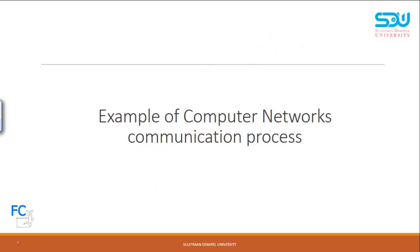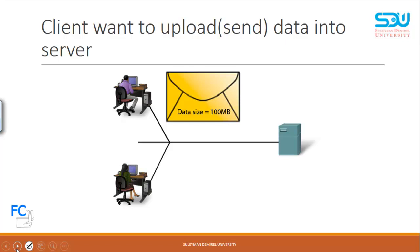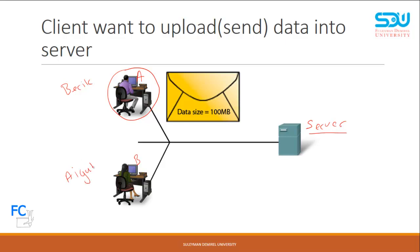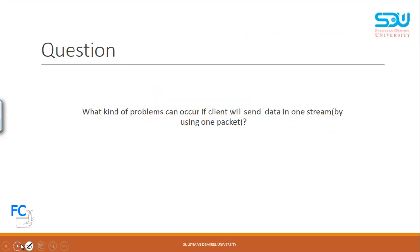Let's look at the computer networks communication process. In this example, we have three end devices: computer A, computer B, and a server. The client — let's say his name is Beric — wants to send information of 100 megabytes to the server. The question is: what kind of problem can occur if the client sends data in one stream, using one single packet?